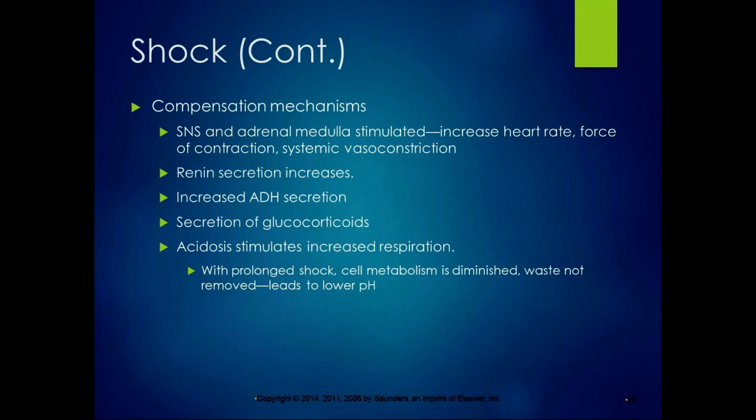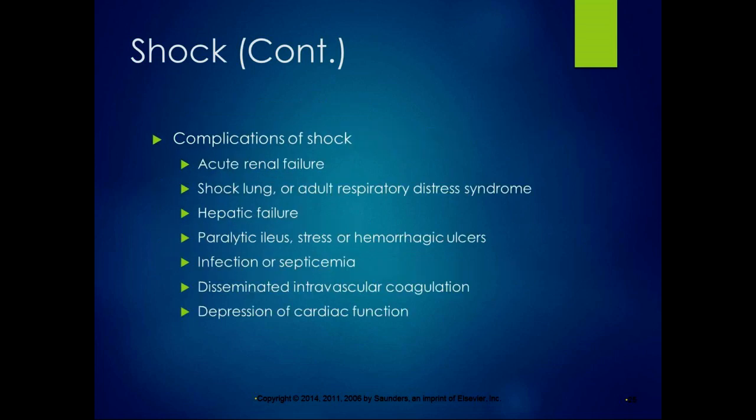With prolonged shock, you get diminished cell metabolism because oxygen is needed for cellular metabolism, wastes are not removed, and that leads to lower pH. Complications can include acute renal failure, shock lung (adult respiratory distress syndrome), liver failure (hepatic failure), paralytic ileus, stress or hemorrhagic ulcers — which can cause problems in the digestive system — infection or septicemia, disseminated intravascular coagulation, and depression of cardiac function. All of these can be life-threatening.